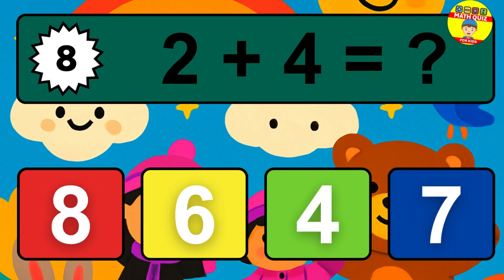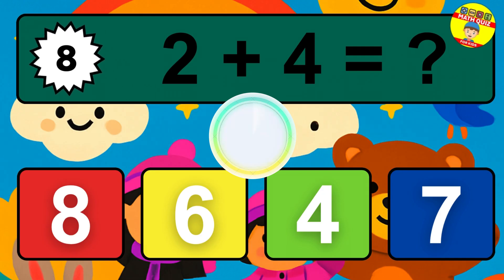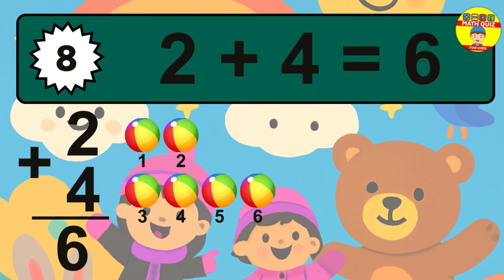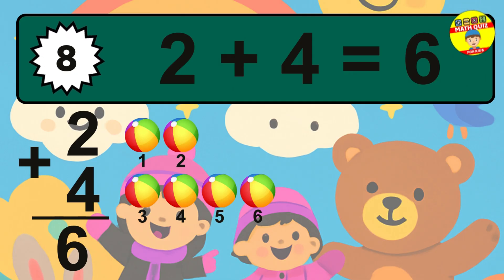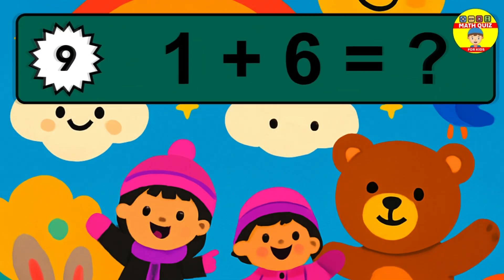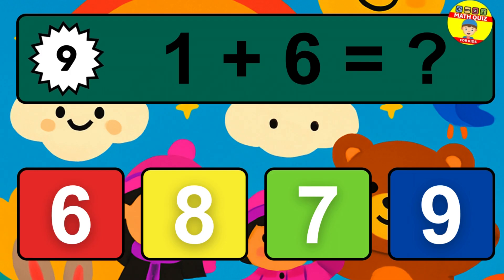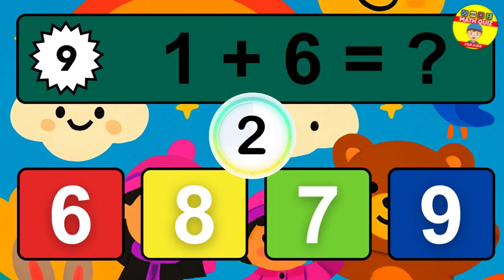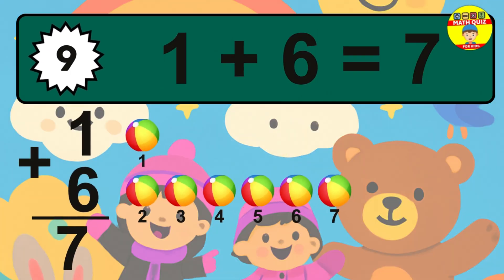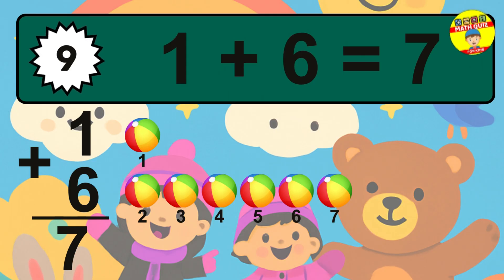Question 8. 2 plus 4 equals what? The answer is 2 plus 4 is 6. Let's count it: 1, 2, 3, 4, 5, 6. The answer is 1 plus 6 is 7. Let's count it: 1, 2, 3, 4, 5, 6, 7.